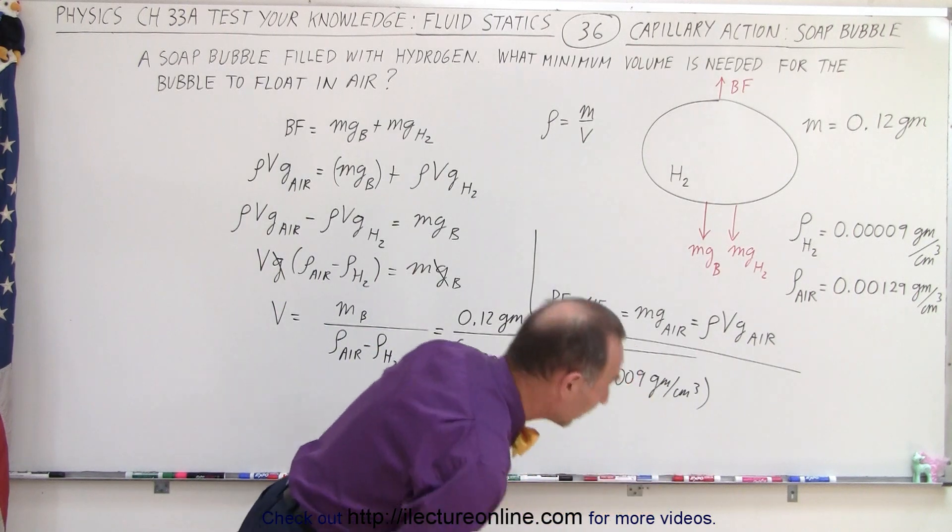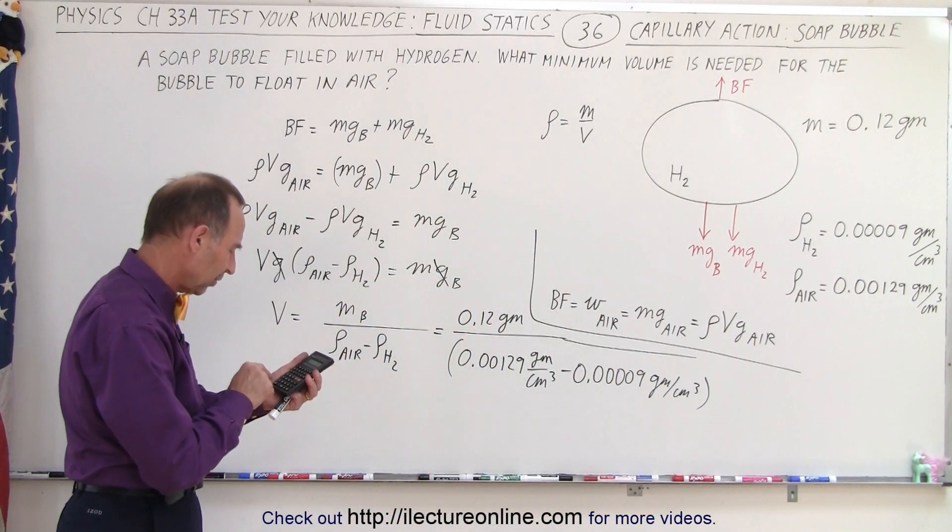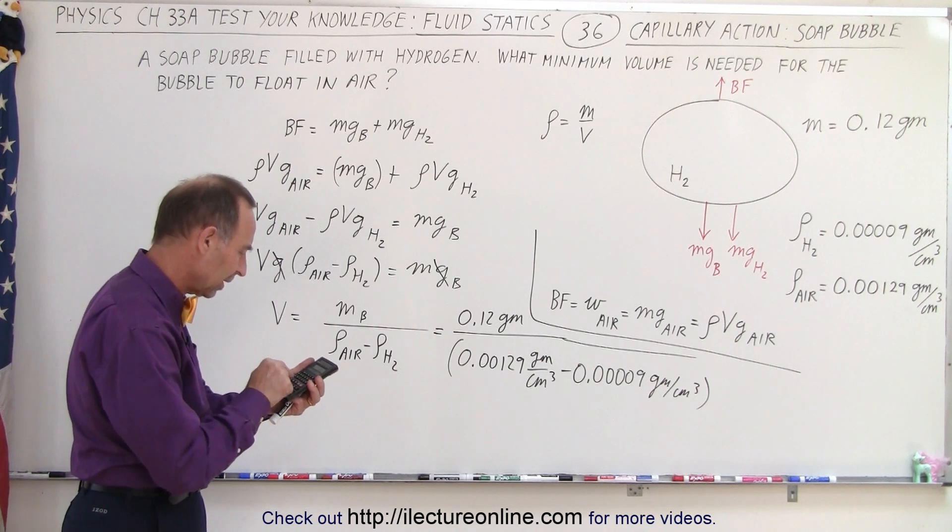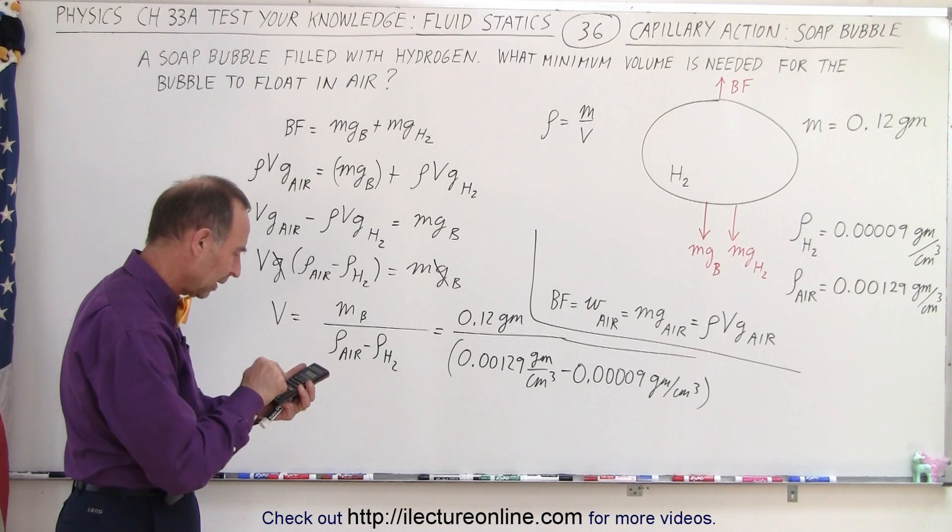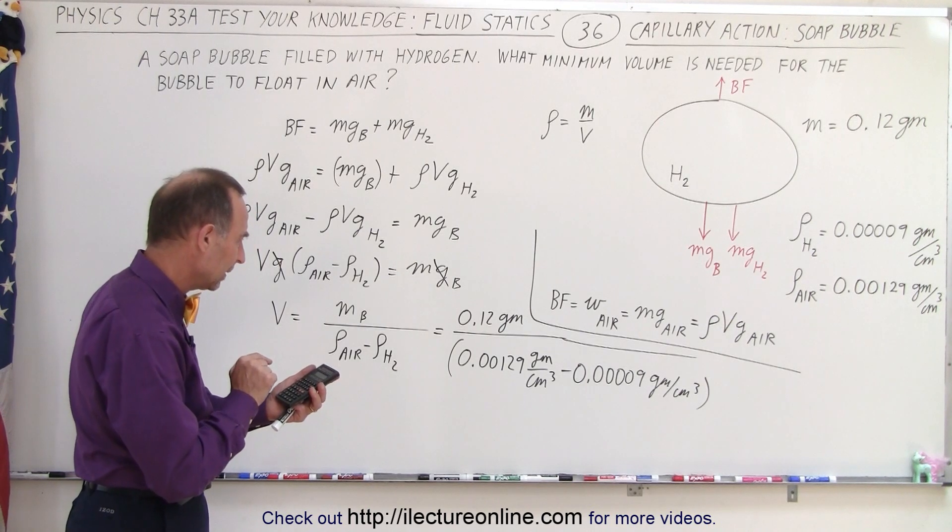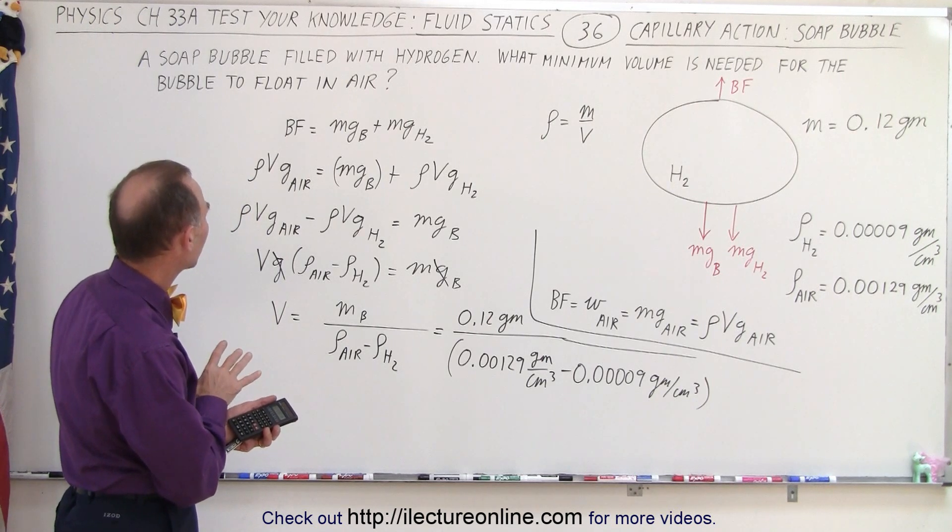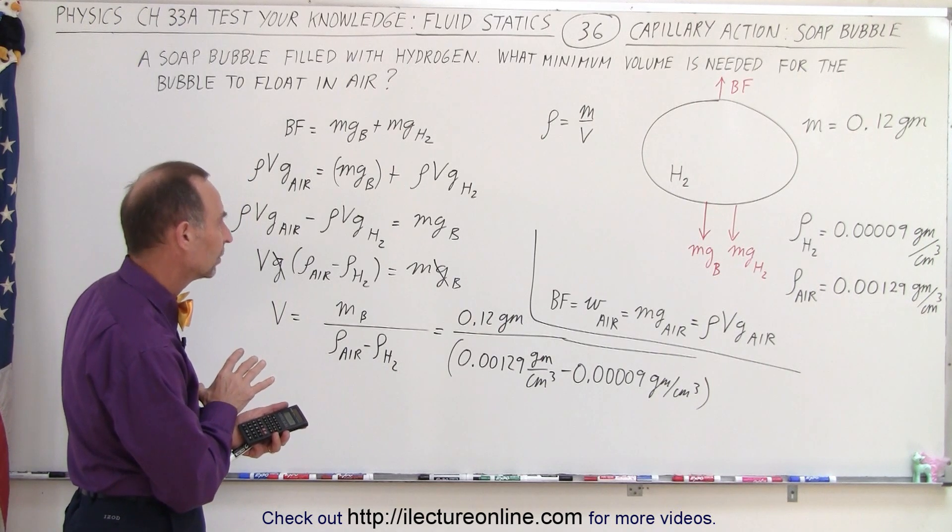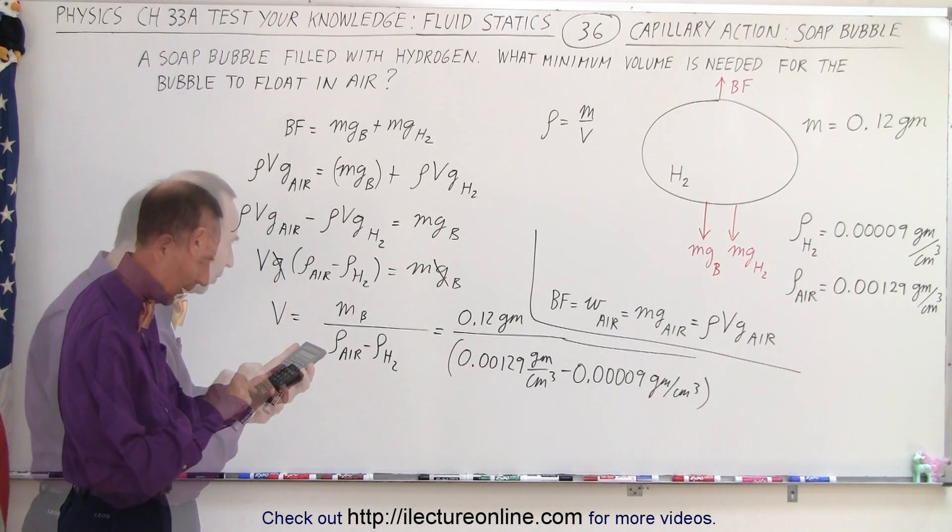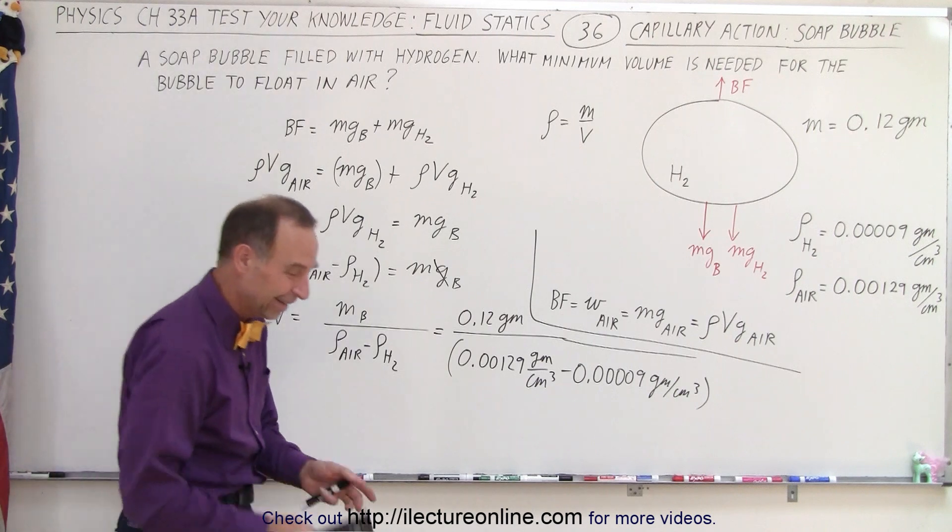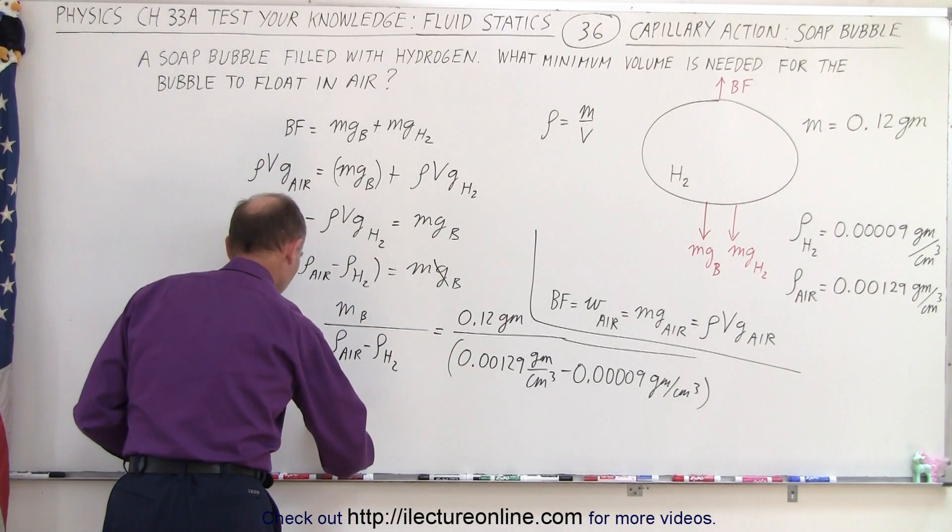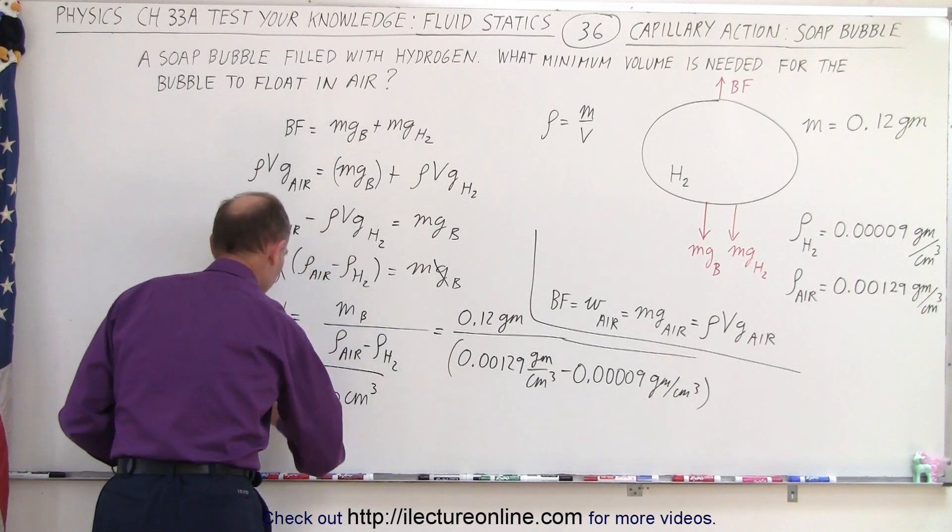So let's figure that out. I have 0.00129 minus 0.00009 and take the inverse times 0.12, and something is not quite right. Let me try it again. Multiply it times 0.12. Ha, see, I did suspect an error there. So the volume equals 100 cubic centimeters.